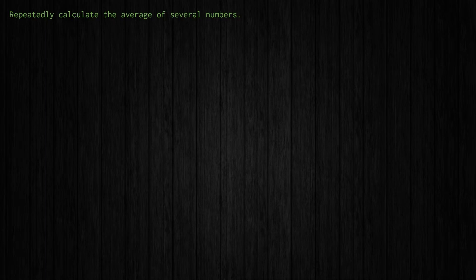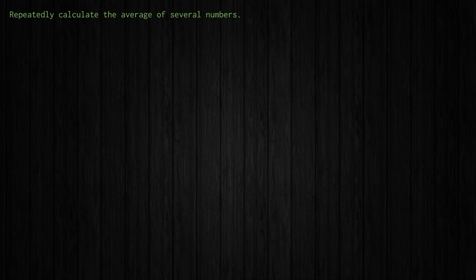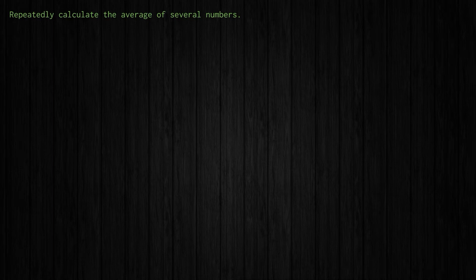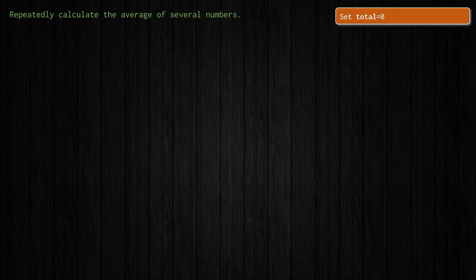The user inputs the first value and the total becomes zero plus whatever that value was. Then we repeat the process: input the second number and take our current total and add the next number to it. We do this until all five values have been input, then divide the result by five and there's your average. We're going to use a loop to get the user to input the five numbers and each time increase the total by that value. Let's take a look at some pseudocode: the first step is to set the initial value of total to zero.